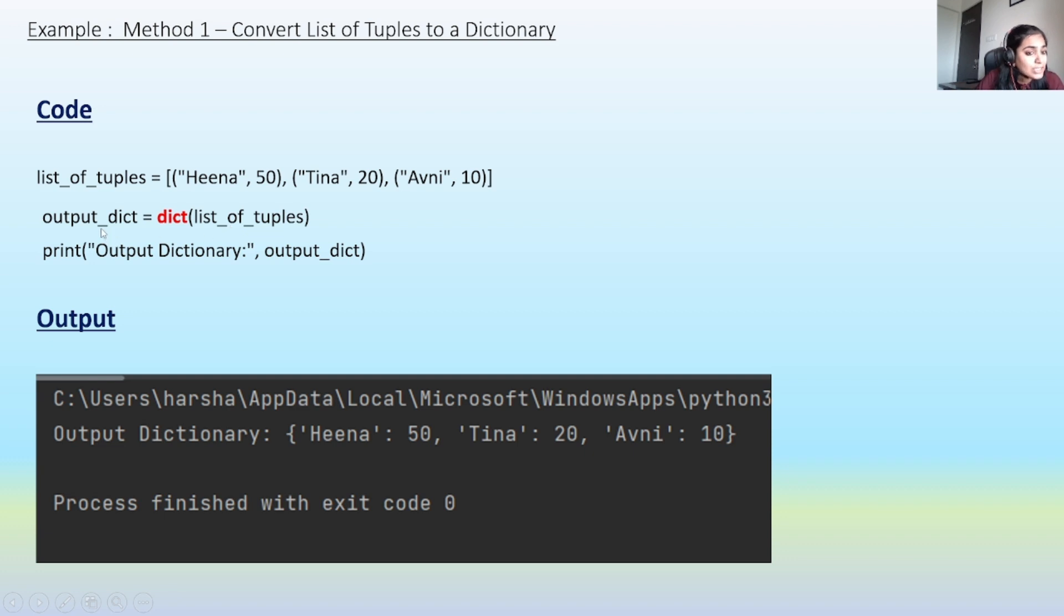The first element, or we can say the first value of each of these tuples, is becoming the key of the dictionary, and the second value of these tuples is becoming the value of our output dictionary.